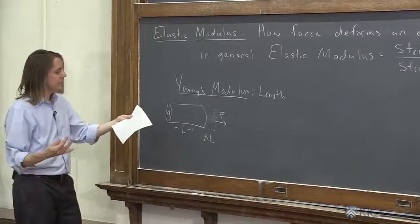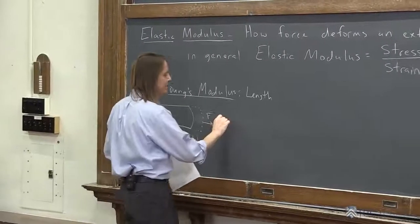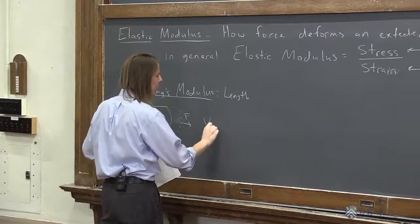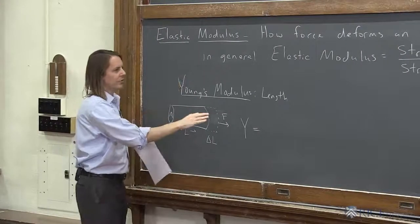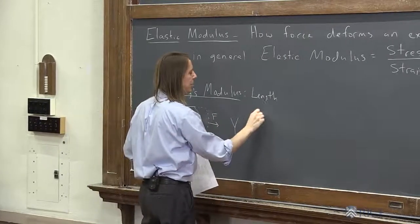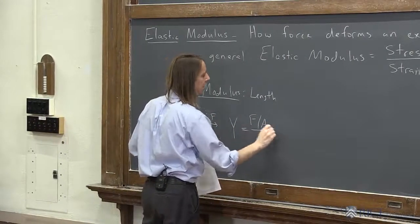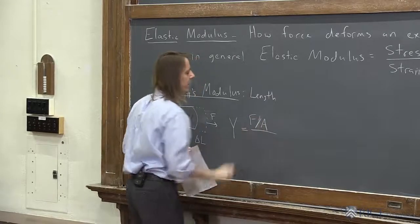So this is just the equation that describes that. There's this thing called the Young's modulus, Y, and it is the stress over the strain. The stress is the force per unit area, so it's got the unit of a pressure. It's kind of like a pressure, force per unit area.